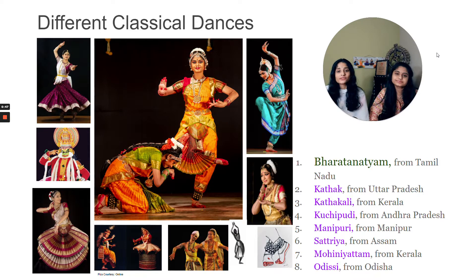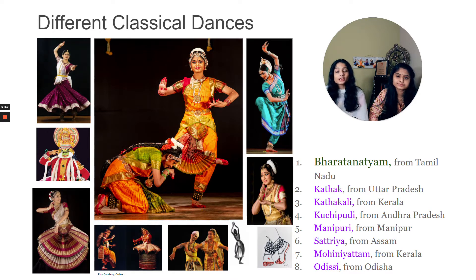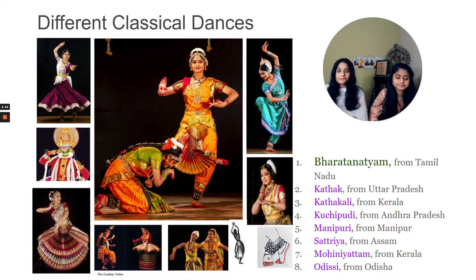There are many different types of classical dances that have originated from all over India. However, these classical dances share the same fundamentals: the dancer should have good stamina, grace, and composure. The dancer should also be able to dance to music that is fast and slow, following the beats accordingly. The dancer should also be able to show emotion through action or facial expression, as well as show spirituality towards God and nature, which is what a lot of these dances are based on.